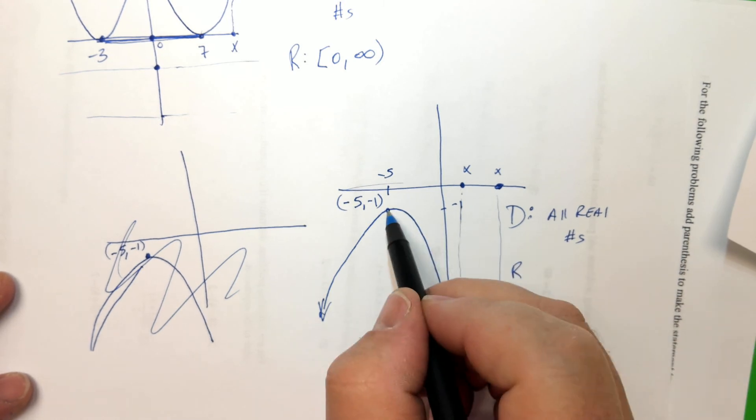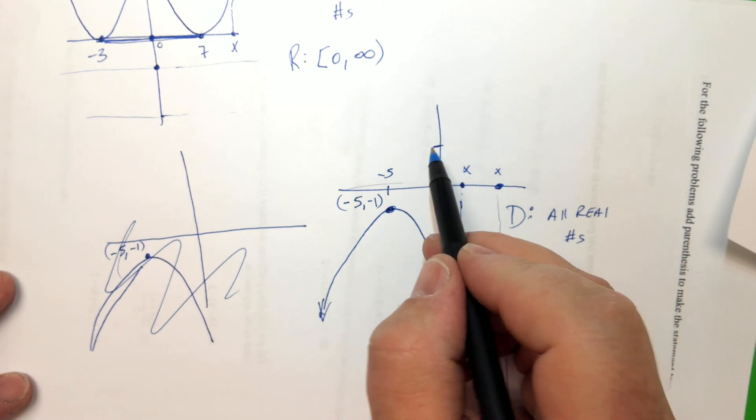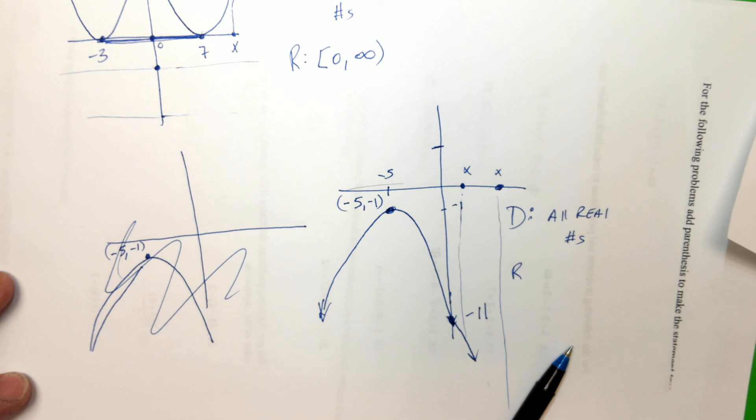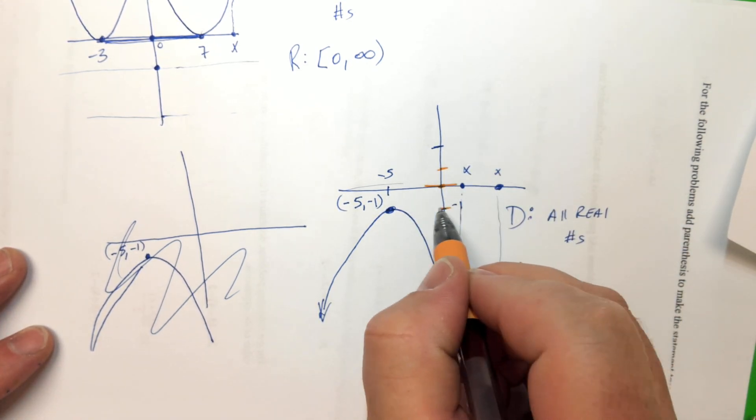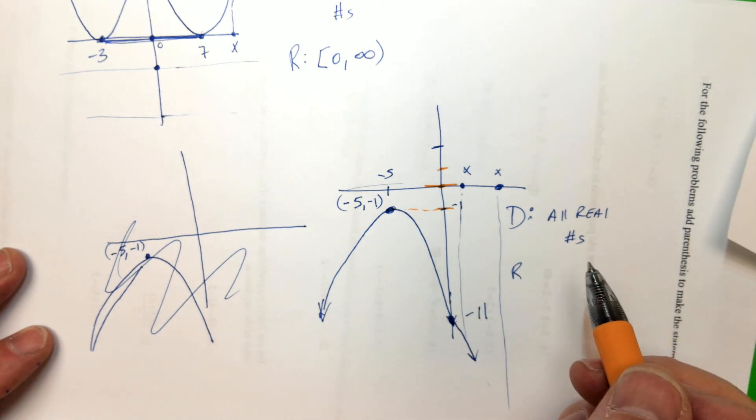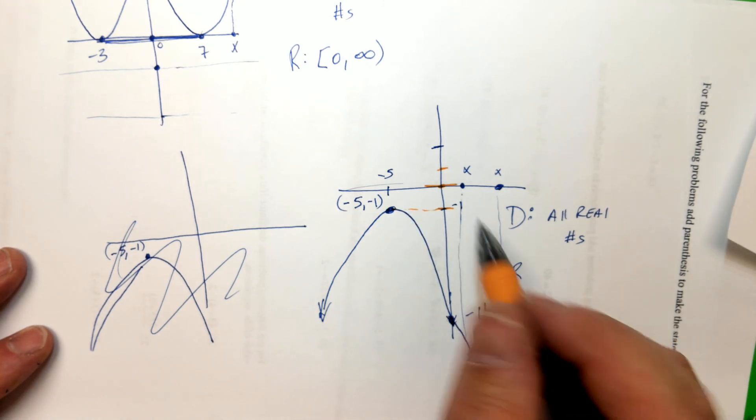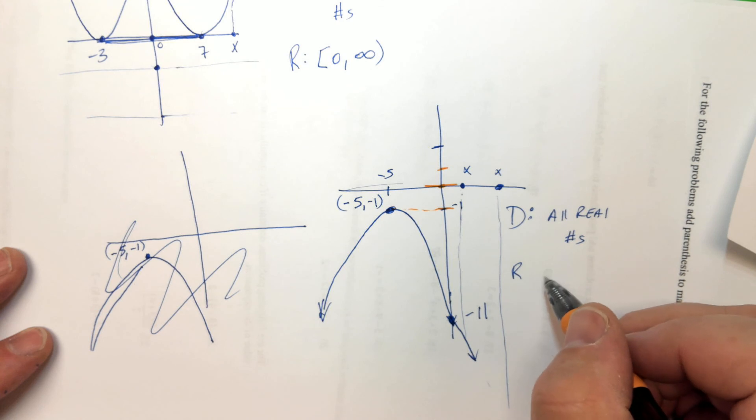The range is tricky. The range, like there's nothing up here for the range. And there's nothing here for the range. There's nothing here for the range. There's nothing until you get right here. That's the first output, is negative 1. The very first output you have is negative 1.